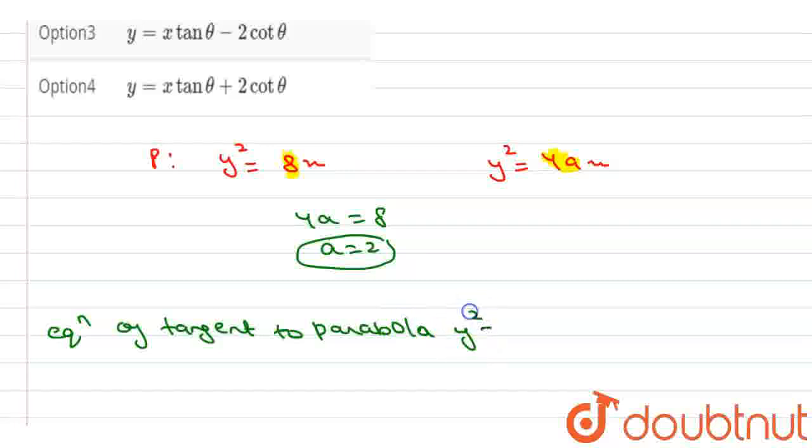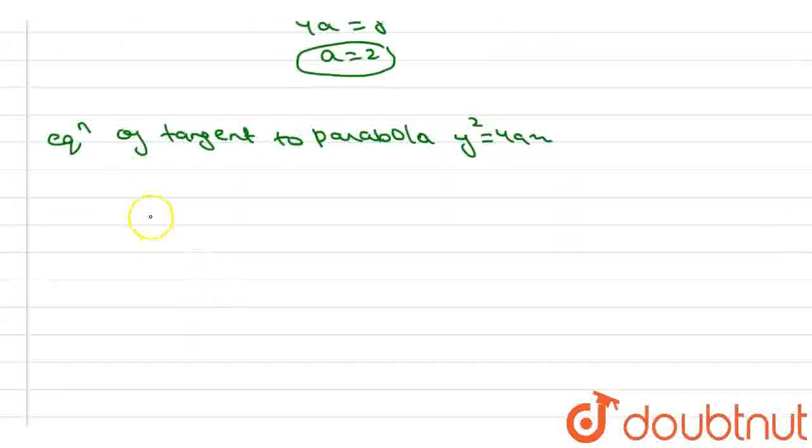Of y square equal to 4ax is basically y equal to mx plus a by m. And we find that a equal to 2 so we can write as y equal to mx plus 2 by m.